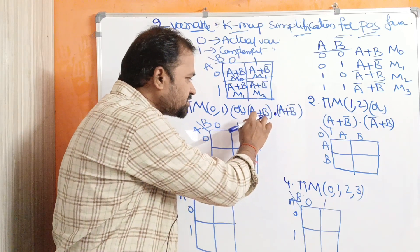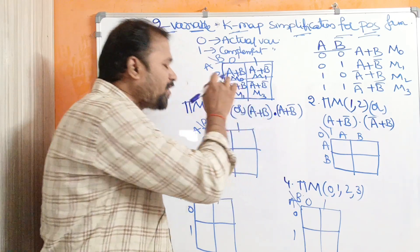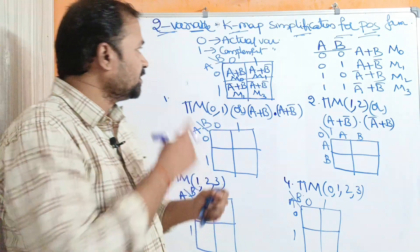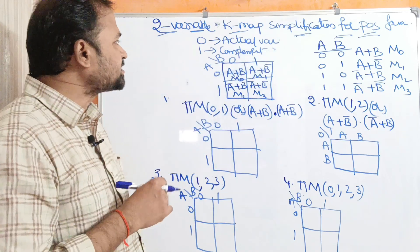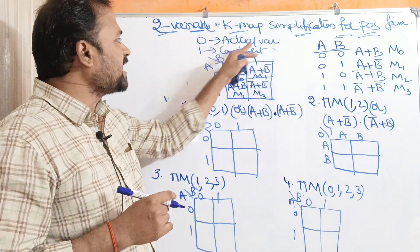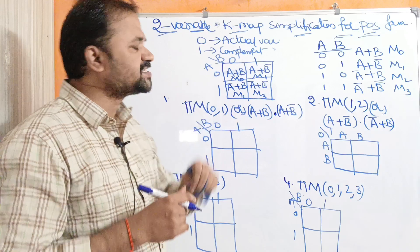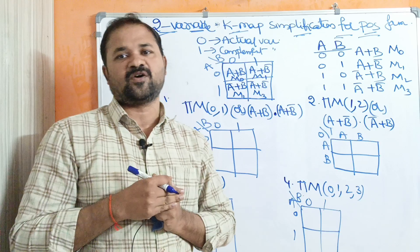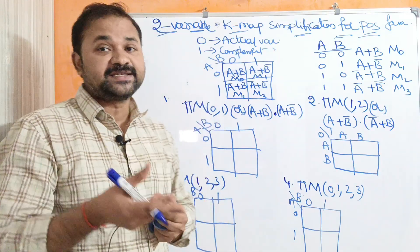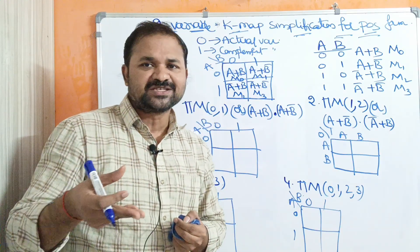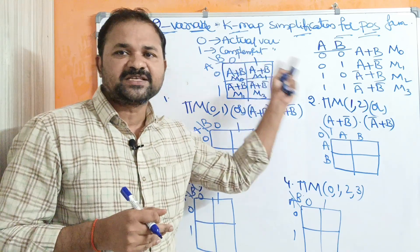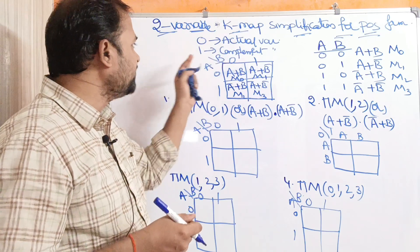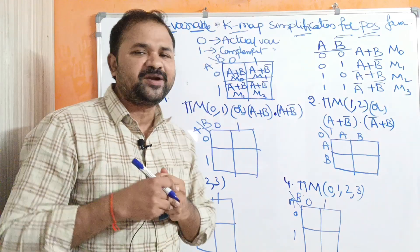Max term means we need to perform OR operation on the corresponding variables or literals. In POS form, a 0 means the actual variable, whereas 1 means the complement of the variable. This is the reverse of Sum of Products form, where 1 means the actual variable and 0 means the complement of the variable. So POS form is the reverse: 0 means actual variable, 1 means complement.